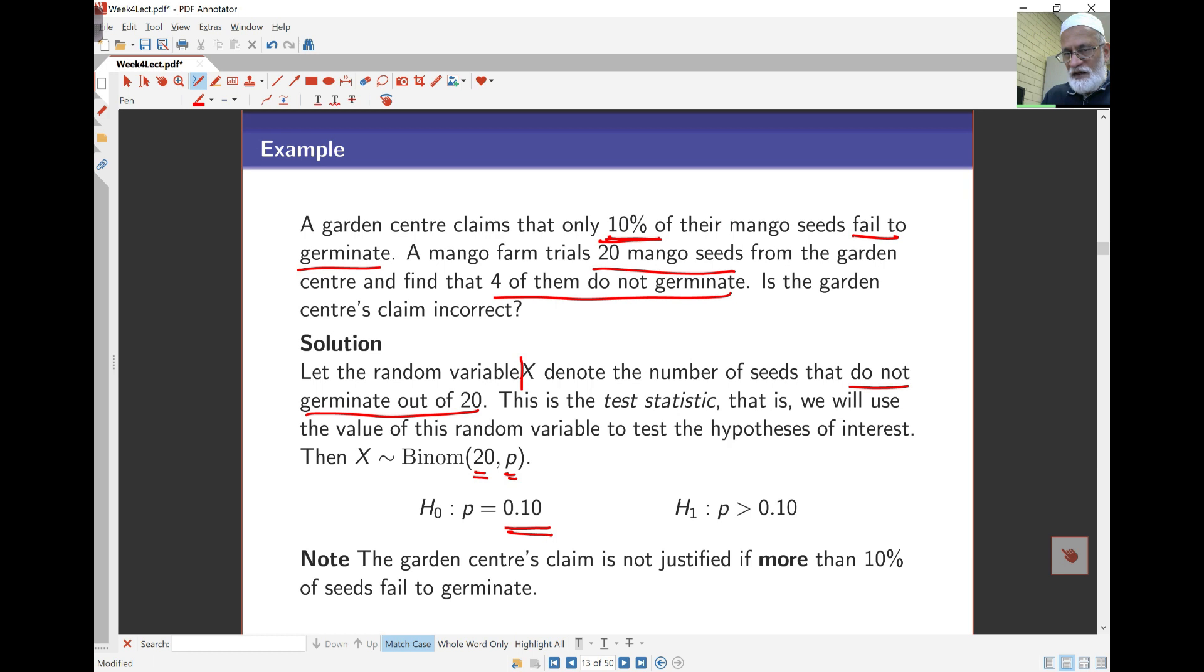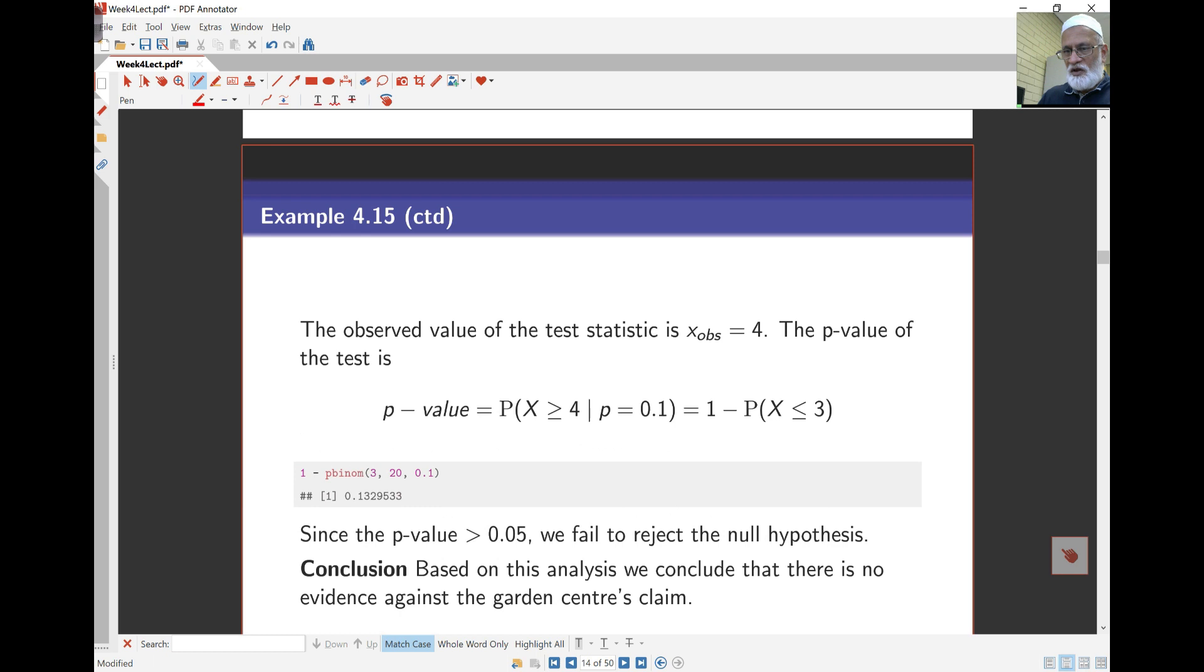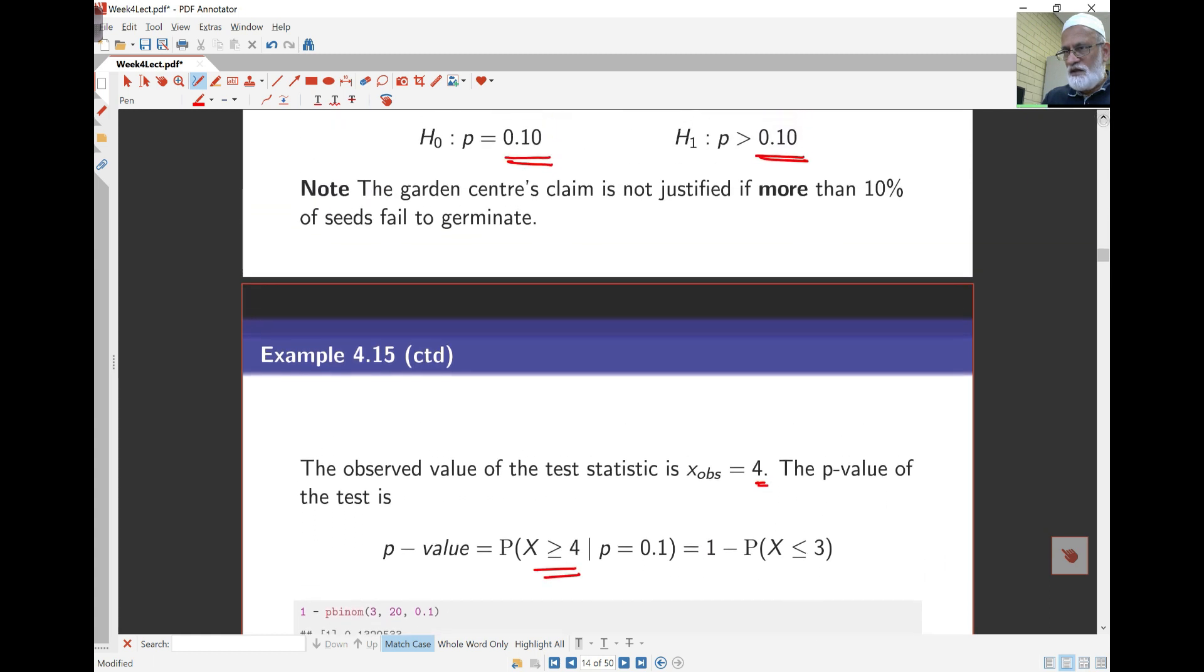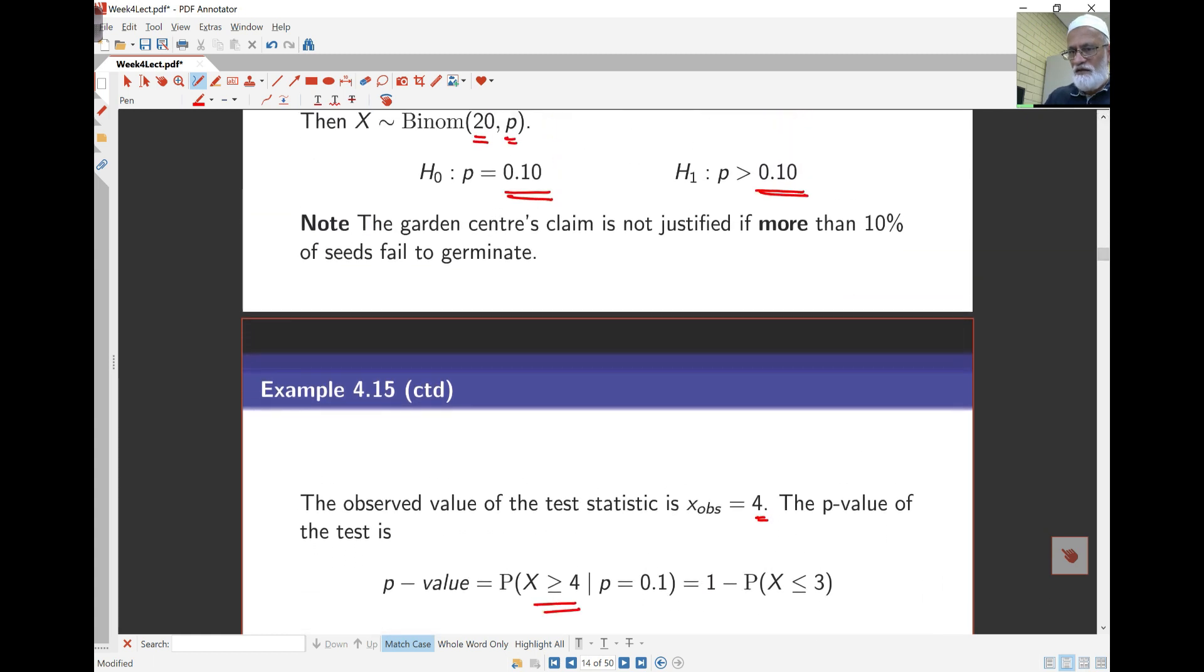The garden center is only in trouble if more than 10% don't germinate. With that setup, the observed value of our test statistic X is 4. So the P-value is the probability that X is greater than or equal to 4. The direction of the alternative hypothesis and the direction of the probability in the P-value are the same.